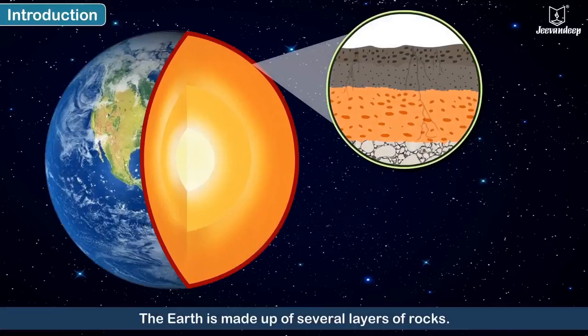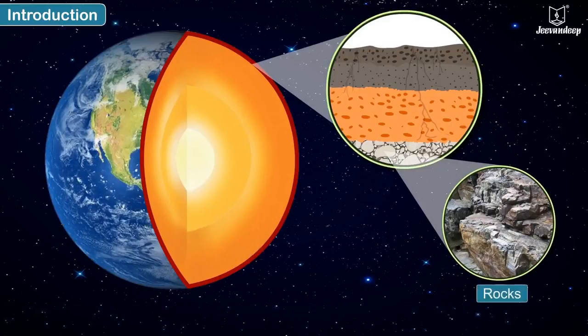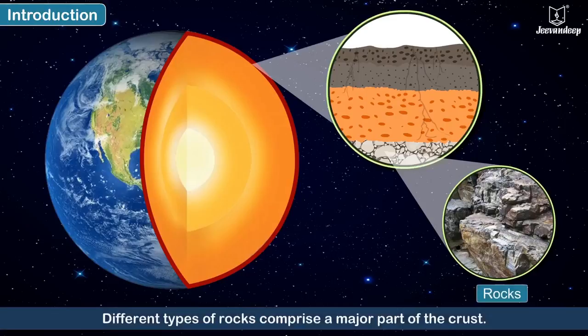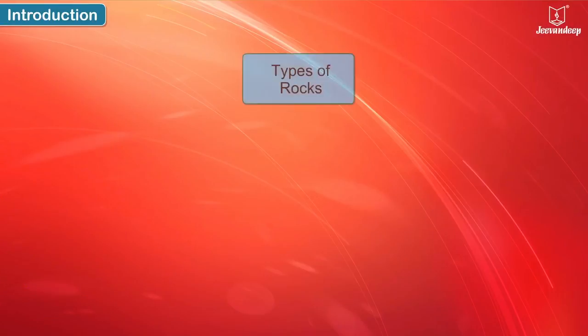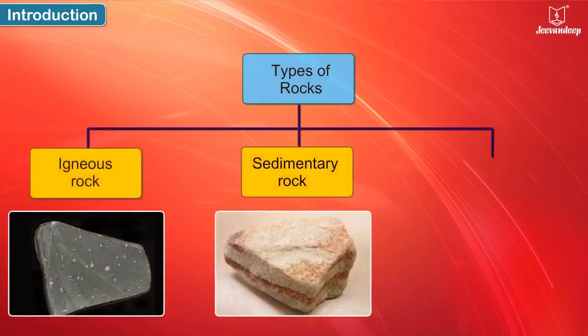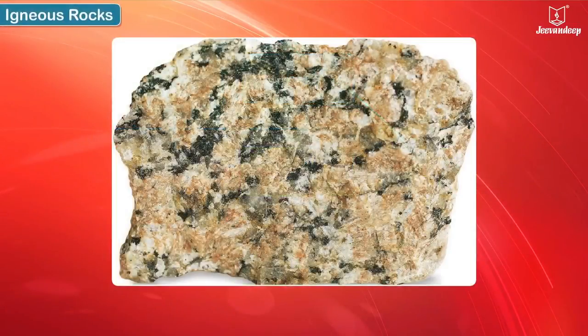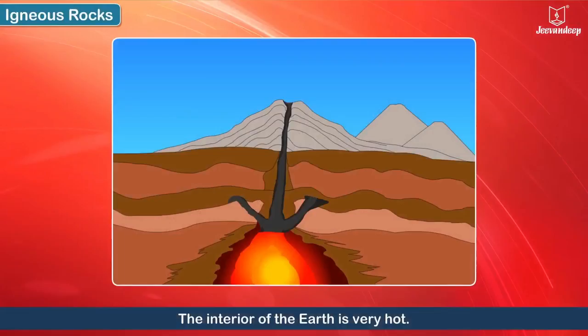The Earth is made up of several layers of rocks. The solid parts of the Earth's crust are called rocks. Different types of rocks comprise a major part of the crust. There are three types of rocks: igneous, sedimentary, and metamorphic rocks.